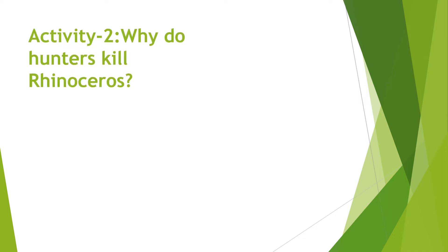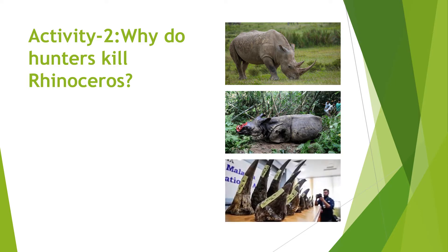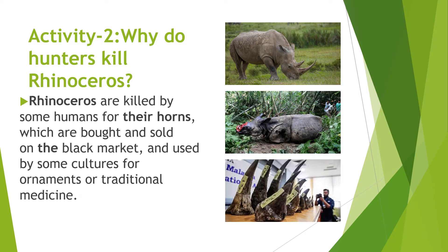Let us start with the second activity. In this activity, you will see the pictures given here and answer the question: why do hunters kill rhinoceros? This is the picture of the rhinoceros, and after the part has been taken out, the injured rhinoceros is shown here. From this observation, rhinoceros are killed by some humans for their horns, which are bought and sold on the black market, and used by some cultures for ornaments or traditional medicine.